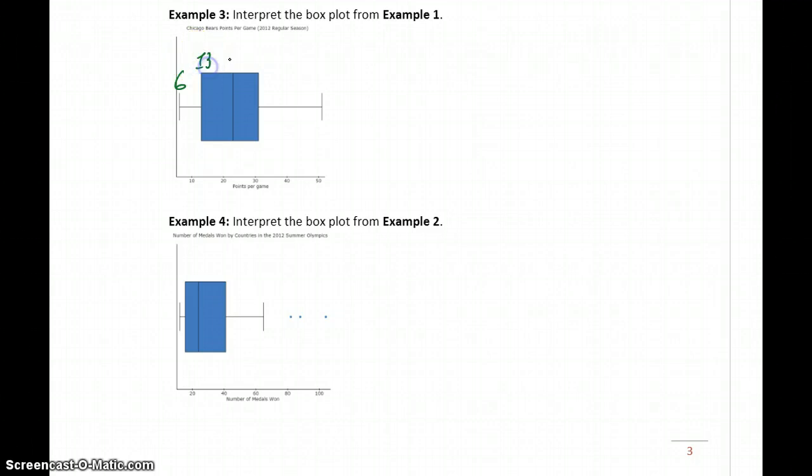the minimum value which is 6, Q1 which is 13, the median of 23, Q3 which would be 31, and the maximum value which would be 51. You could also generate the interquartile range, which in this case would be 18.